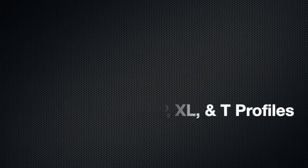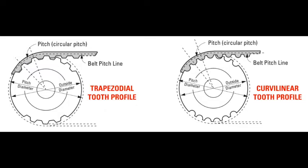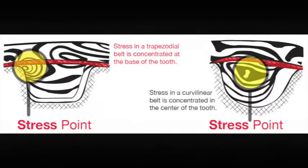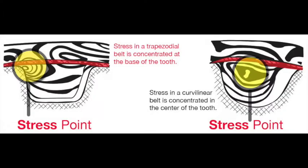MXL, 40DP, XL, and T belts have a trapezoidal profile. The trapezoidal belt profile is a long-established profile, but is superseded by the curvilinear tooth profile. Because stress in a trapezoidal belt is concentrated at the base of the teeth, a high amount of belt wear occurs during operation, which reduces the life of the belt.